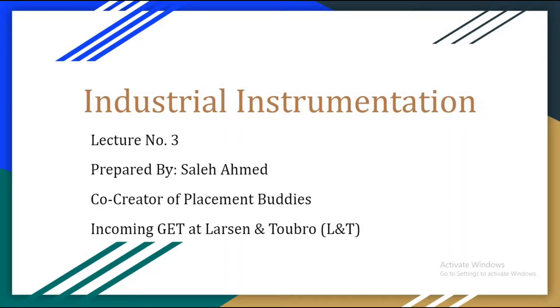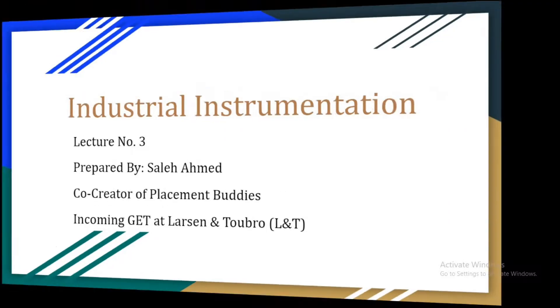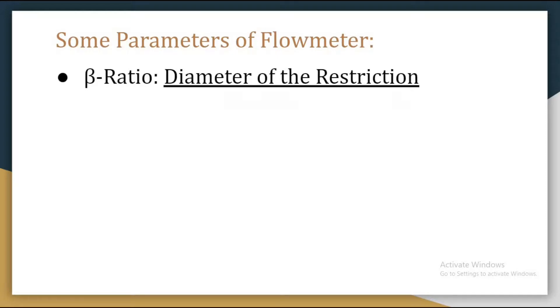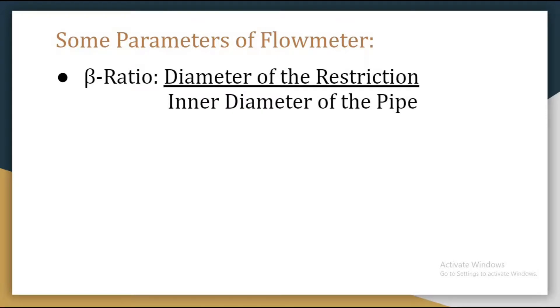Hello everyone, let me welcome you all to the next lecture of this industrial instrumentation playlist. In this lecture, we will first study about some parameters of a flow meter. The first parameter is beta ratio.